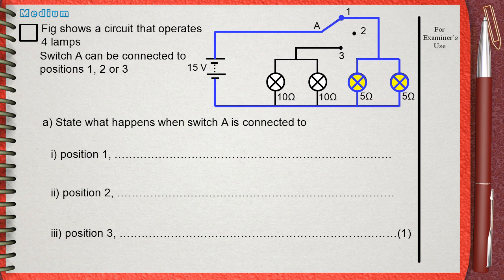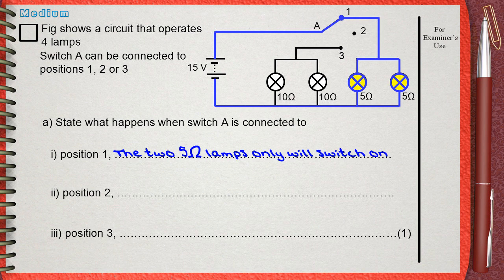This will be our closed circuit if switch A is at position 1. The two 10-ohm lamps will be off because they do not close a circuit between the positive pole of the battery and the negative pole of the battery. The answer will be the two 5-ohm lamps only will switch on.